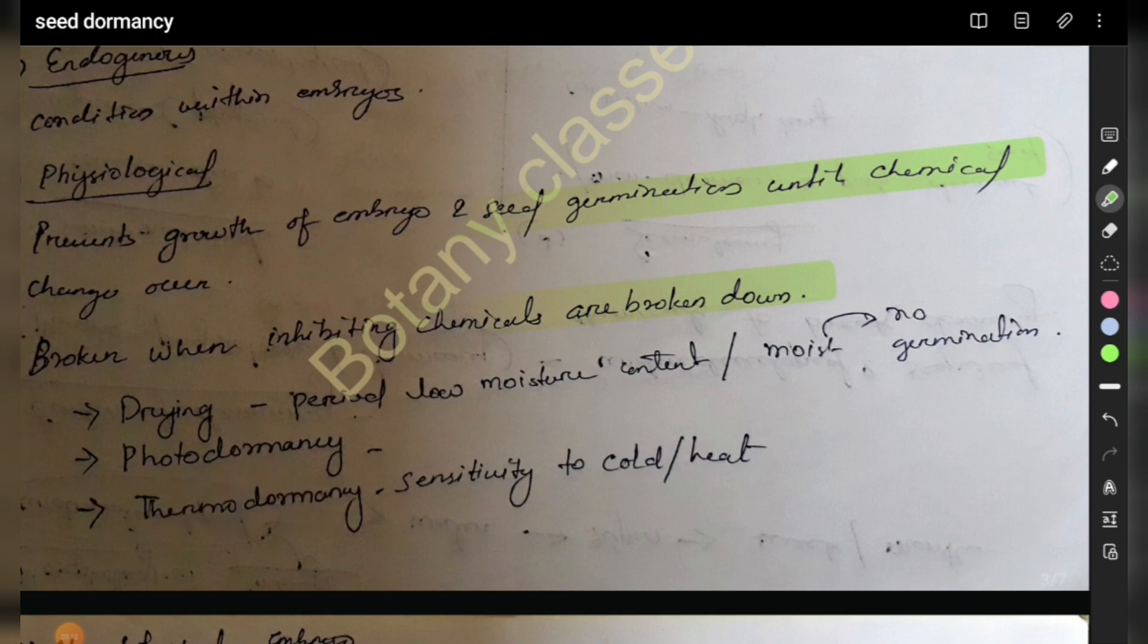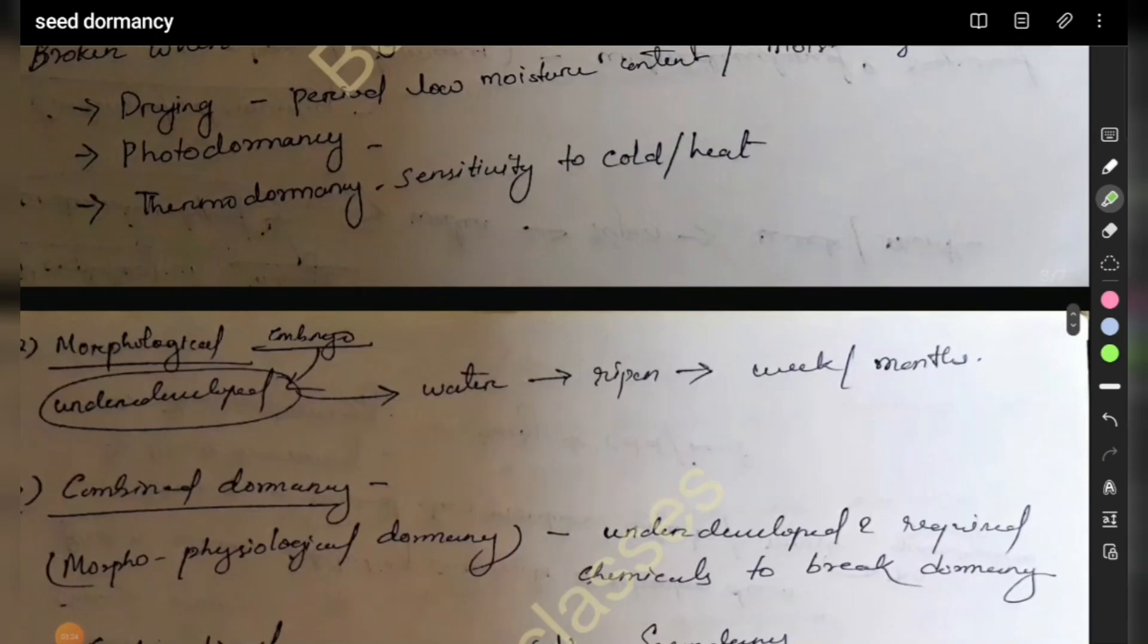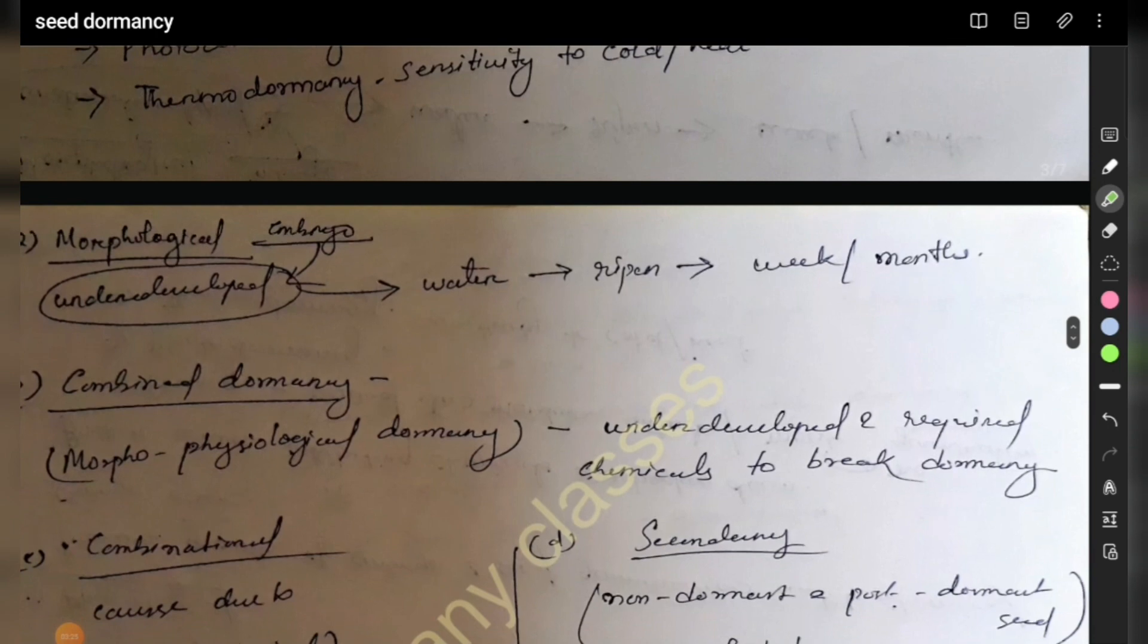Photodormancy is sensitivity to cold or heat. Seeds may be sensitive to very warm or very cold temperatures. Then there is morphological dormancy.